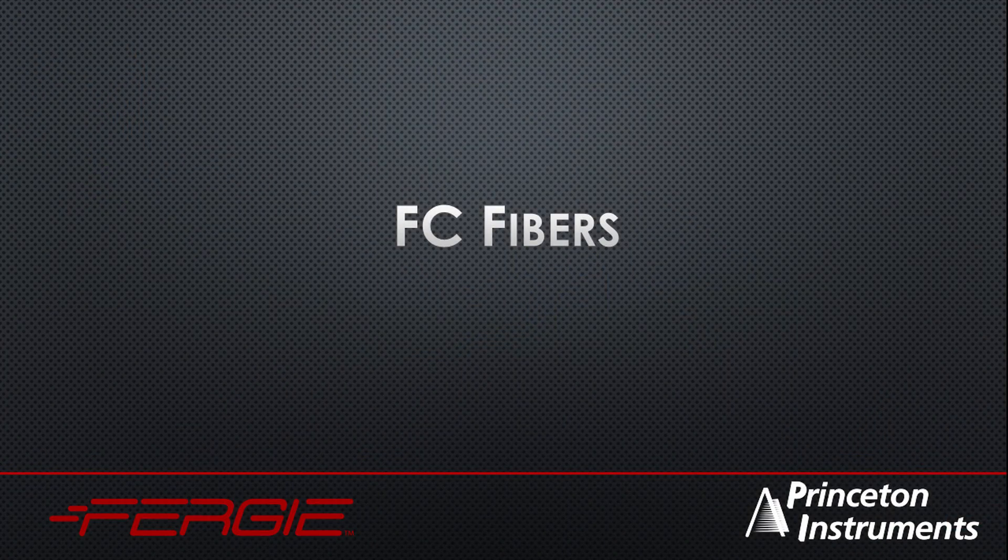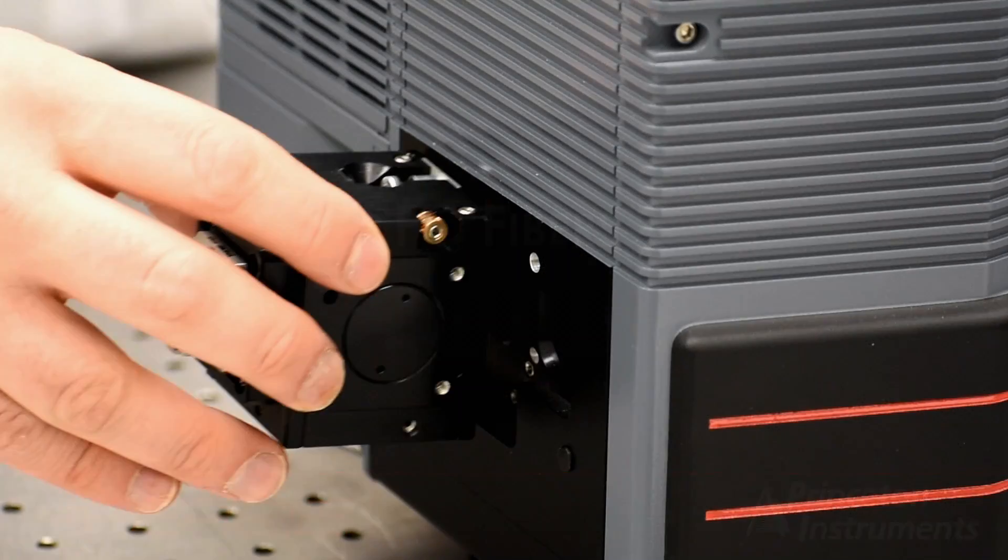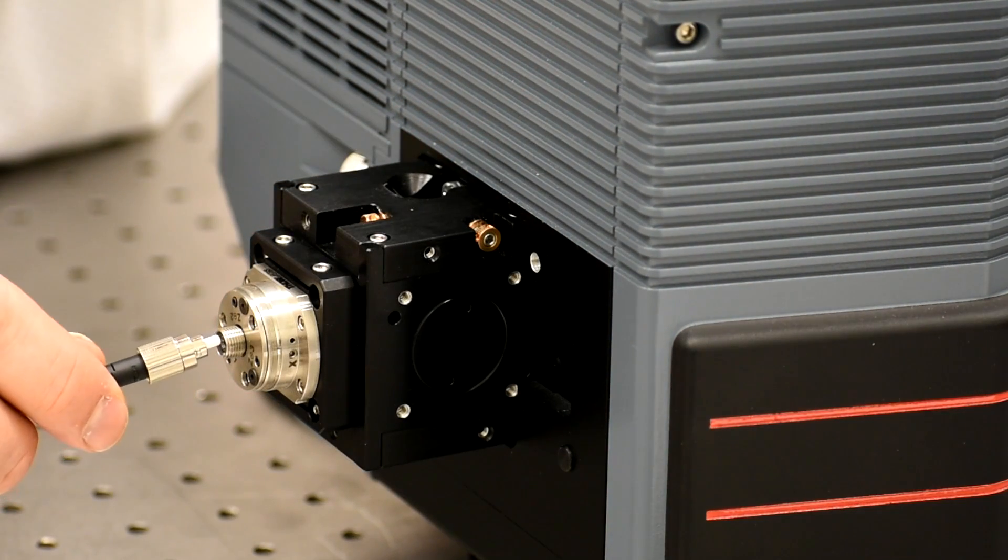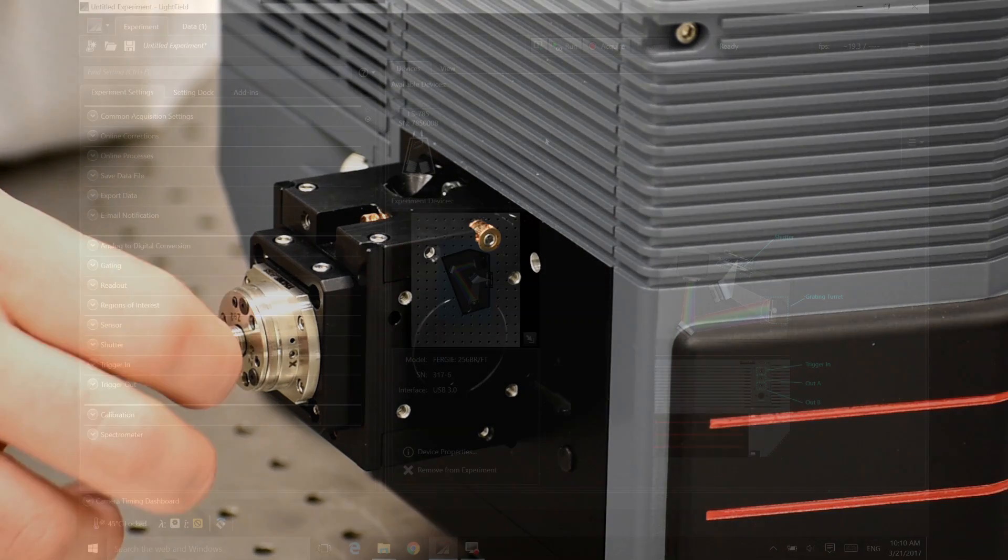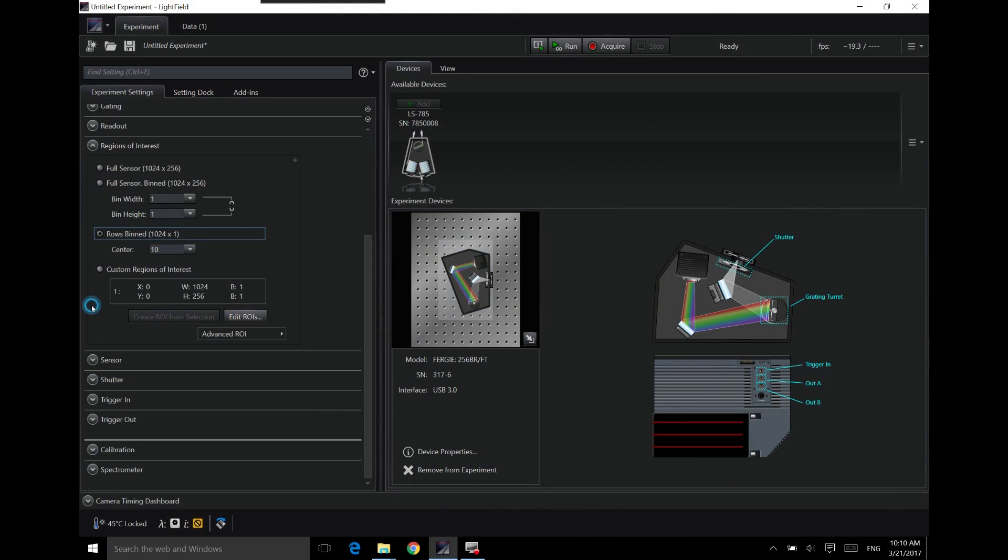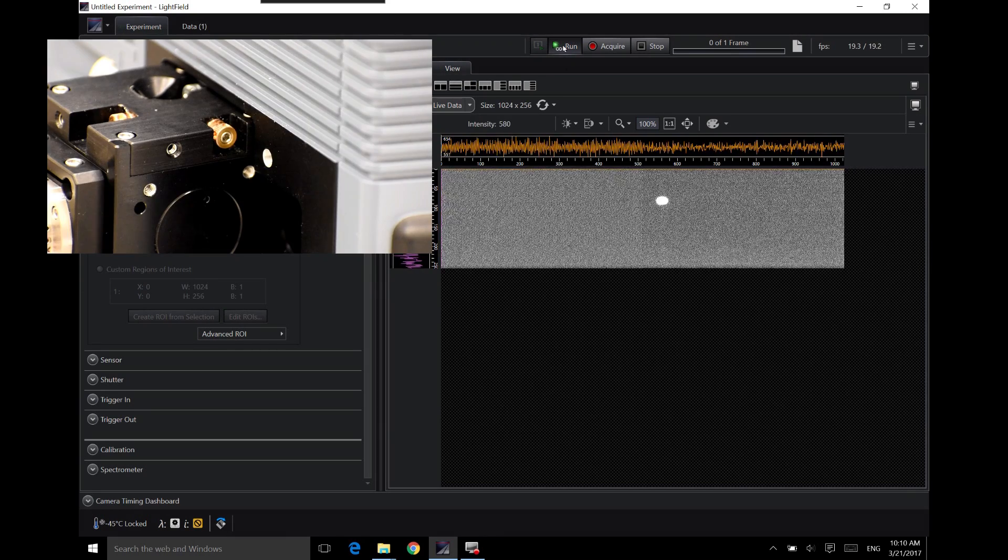Here is how to connect FC fibers. Simply attach the focus cube assembly and insert the fiber optic cable. Now open the Light Field software and select full sensor in the region of interest settings. Then press run to observe a live image of the fiber on the CCD.